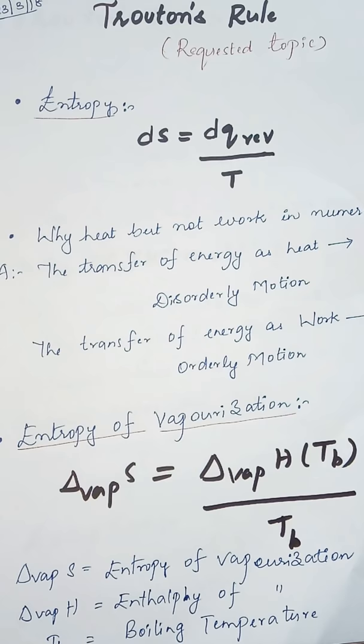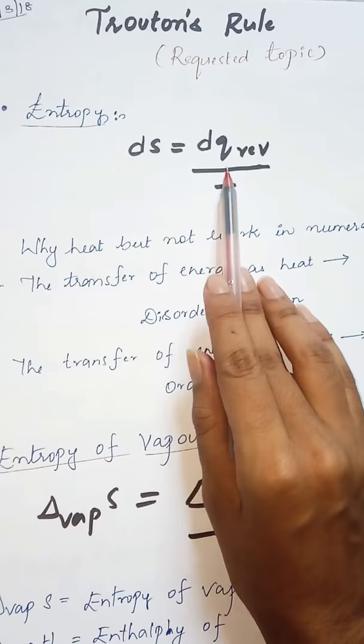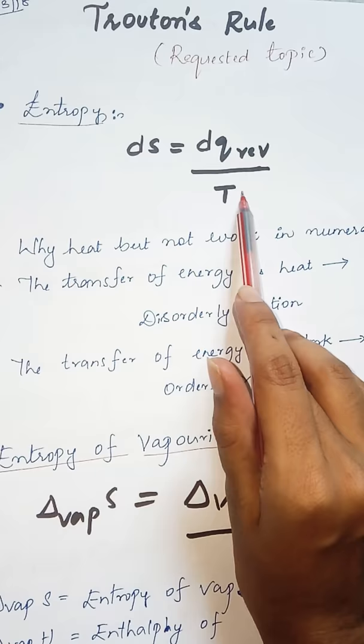That is entropy and entropy of vaporization. As we all know, the change in entropy of a system is equal to the amount of energy transferred in the form of heat in a reversible way to the temperature at which the transfer takes place. In simple words, dS = dq_reversible / T.